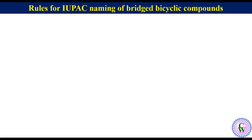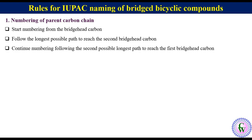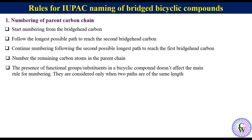Now let's go through some rules specific for IUPAC naming of bridged bicyclic compounds. The first is regarding numbering of the parent carbon chain. Start numbering from the bridgehead carbon. Follow the longest possible path to reach the second bridgehead carbon. Continue numbering following the second longest possible path to reach the first bridgehead carbon. Then number the remaining carbon atoms. The presence of functional groups or substituents doesn't affect the main rule of numbering; they are considered only when two paths are of the same length.